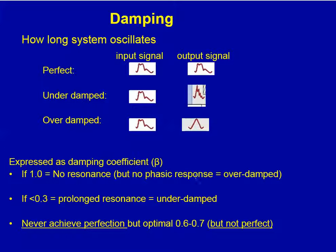The amount of damping is expressed as a damping coefficient which goes from zero to one. When there is complete damping there is no resonance, but there's also no phasic response. Conversely, if it's less than 0.3 there's prolonged resonance and it's under-damped. No degree of damping is perfect — it's always a balance, and empirically a damping coefficient of somewhere between 0.6 and 0.7 is ideal.